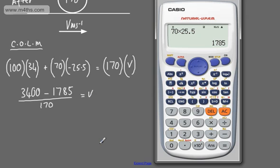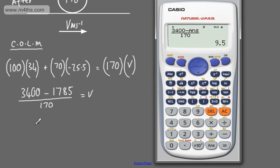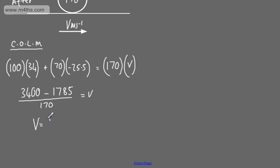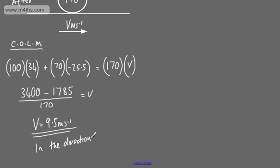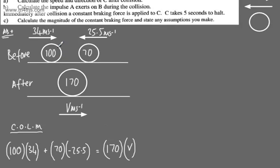If we put this into a calculator — 3400 subtract 1785 and divide by 170 — we get 9.5 m/s. So V equals 9.5 m/s, and this is in the direction AB. We're moving in the same direction that A was moving in before.